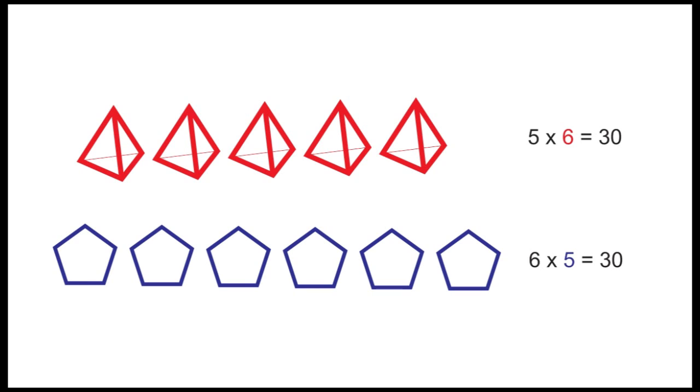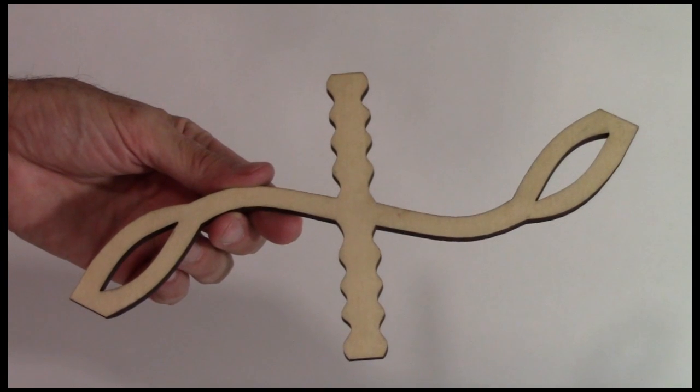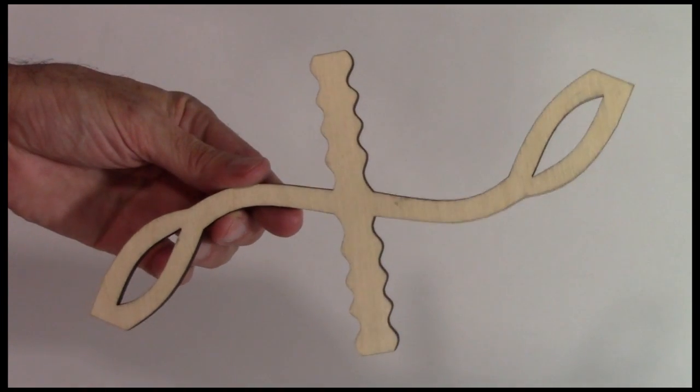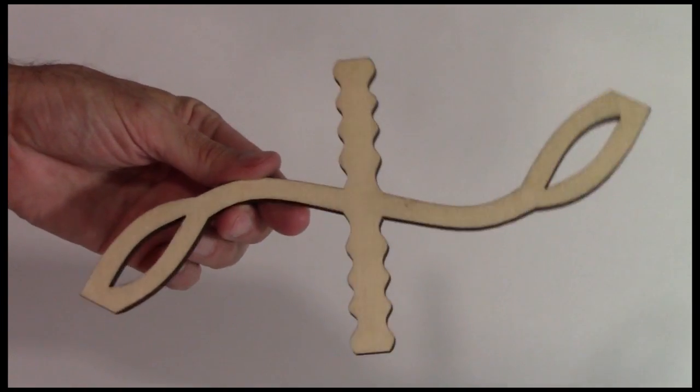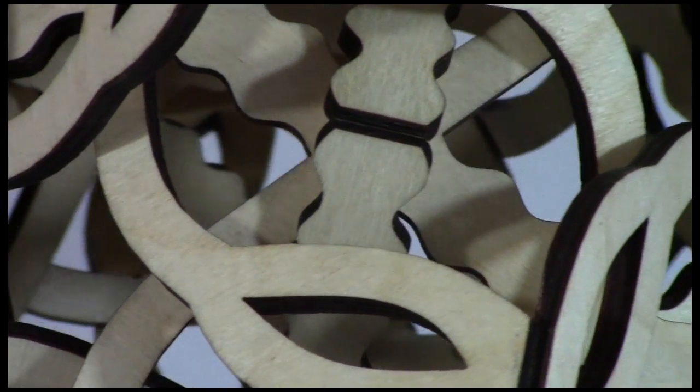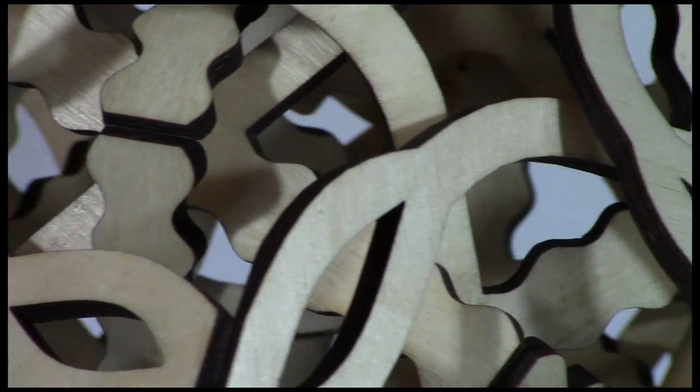And interestingly, I can position these two floppy structures so their 30 edges overlap and join together into 30 identical X-shaped components. One pentagon edge and one tetrahedron edge make a unit. 30 identical parts like this go together to make five tetrahedra and six pentagons simultaneously.